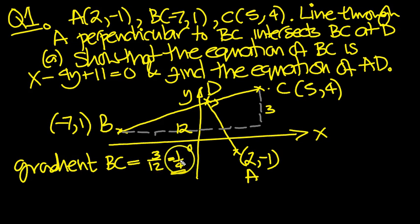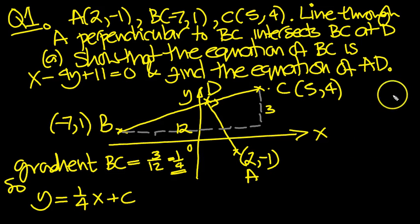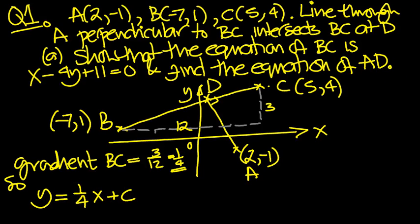Okay, there's our gradient. So y equals mx plus c. And I'm going to write the gradient in straight away. 1 quarter x plus c. So there's our equation of our line here. Now it goes through -7, 1. And it goes through 5, 4. So we can choose which point to put in here. So let's do that now.